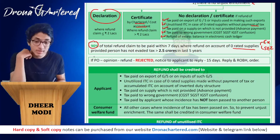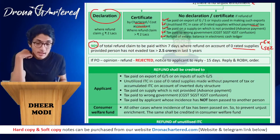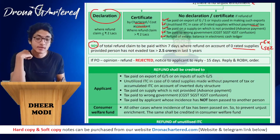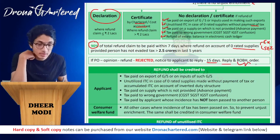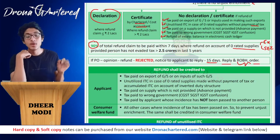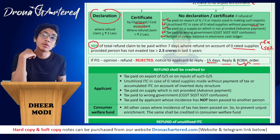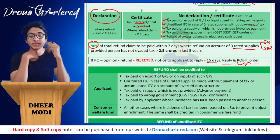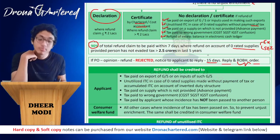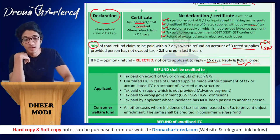If the proper officer is of the opinion that the refund application shall be rejected, he shall give a notice to the applicant to reply within 15 days, along with reasons for rejection, and shall give a reasonable opportunity of being heard. After hearing, the order will be passed.